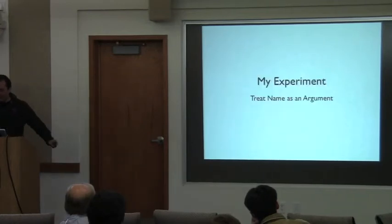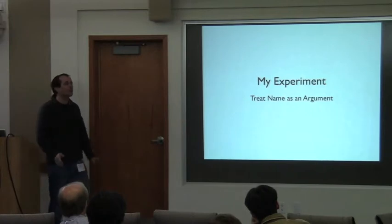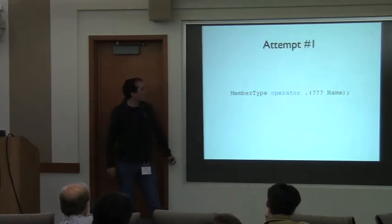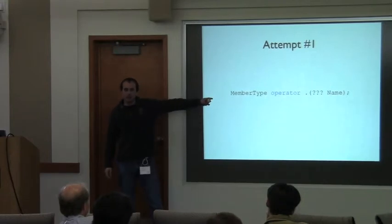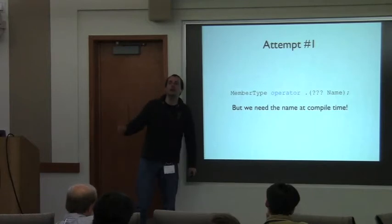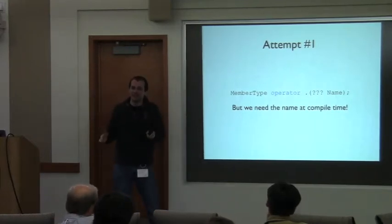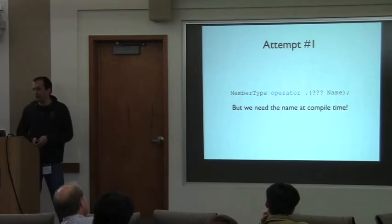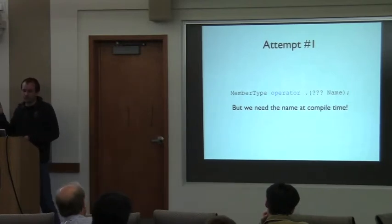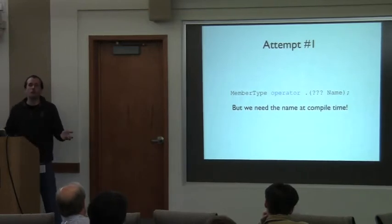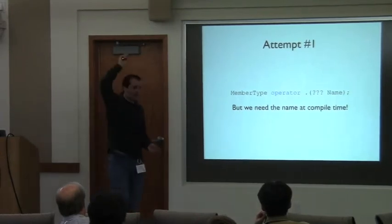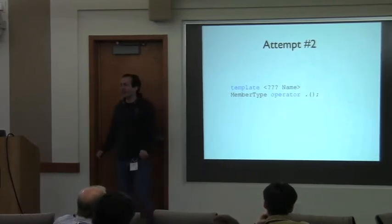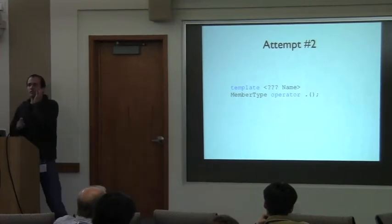We want the name we're accessing as an argument — we want the dot operator to be binary: left side is the object, right side is the name. We need the name at compile time to use it for accessing a member of the same name in another object. A runtime parameter is not good enough. If we want a compile-time parameter, we use a template parameter. The operator has no runtime arguments but has a template argument for the name.